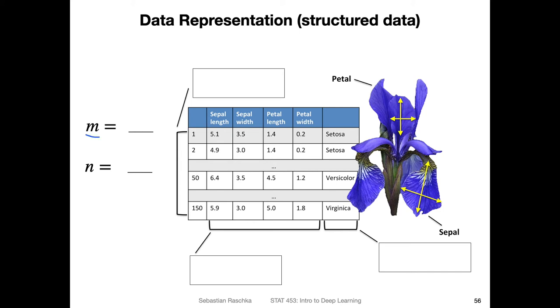So yeah, just to recap, m is the feature number, so we have up to m features, and n is the number of training examples. So I think the reason why I left the blank here, I wanted to ask you that as an exercise, so in that way I already did the exercise for you. So here, the rows - what I was referring to are our training examples, where the columns are our features. And this is our class label column.